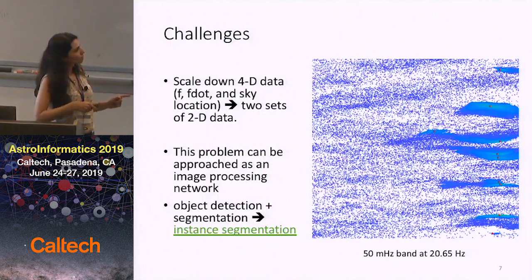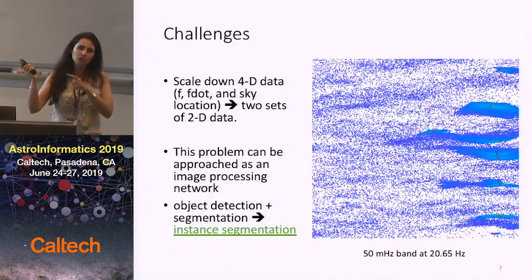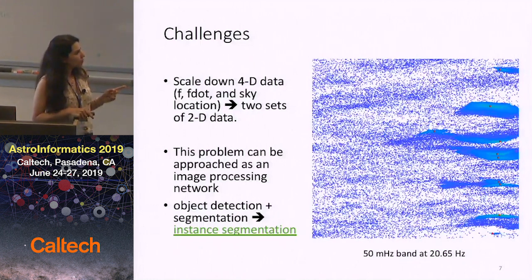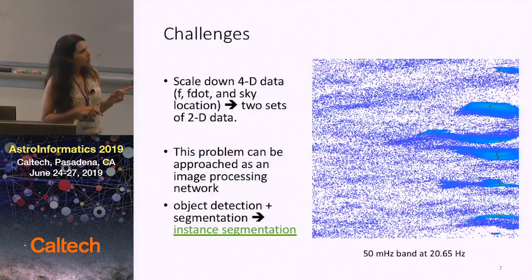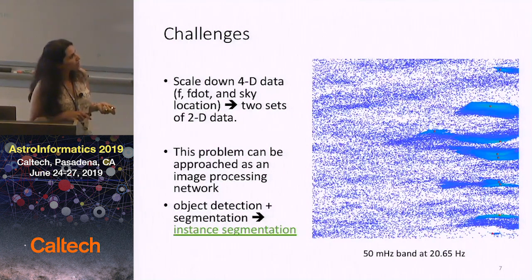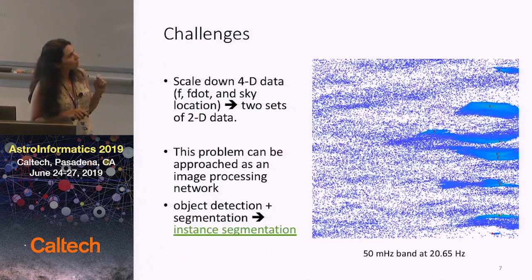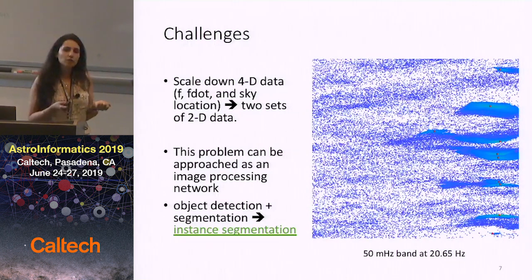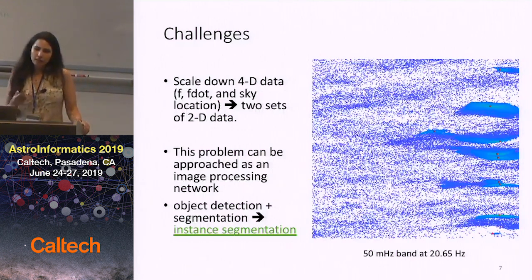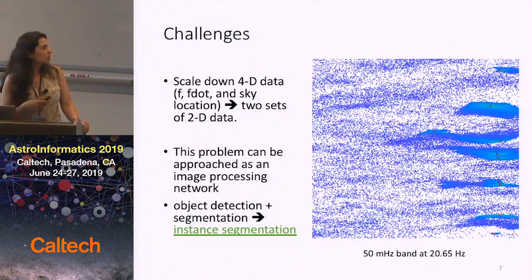Here I'm showing frequency derivative versus frequency, with the other two dimensions projected into that plane. All pixels in frequency and F-dot have values corresponding to the detection statistic. The markers show the center of the signal, and you can see the clusters around it. What we want from the network is to identify each cluster — this is my first cluster with all its related pixels, this is my second cluster, and so on.